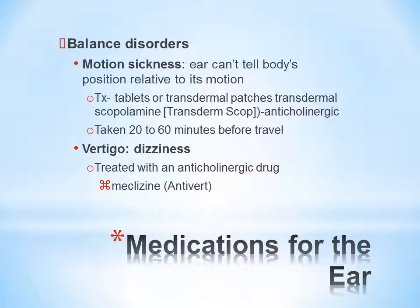Vertigo means dizziness, and it can be treated with meclizine, or Antivert. This is an anticholinergic medication. How it works for vertigo is not precisely known, but it is believed to be related to its anticholinergic action. It diminishes vestibular stimulation and depresses inner ear function.